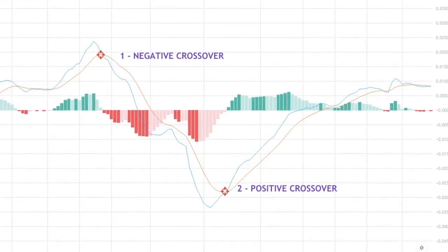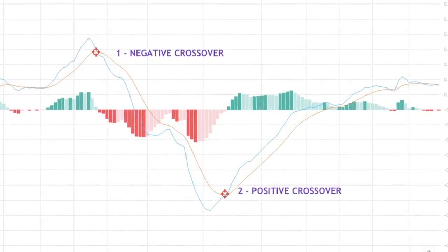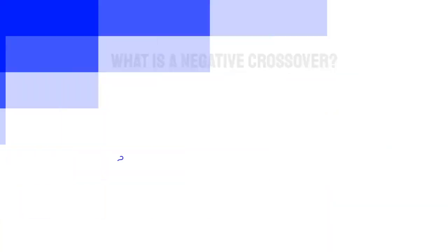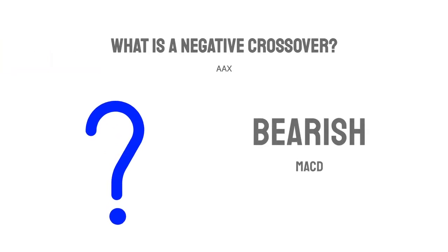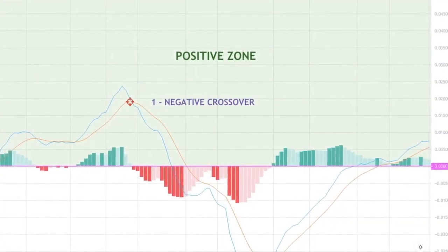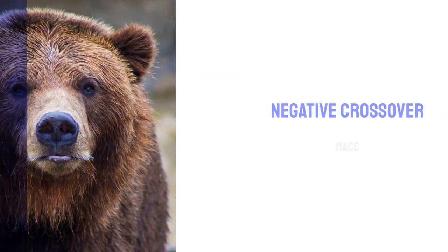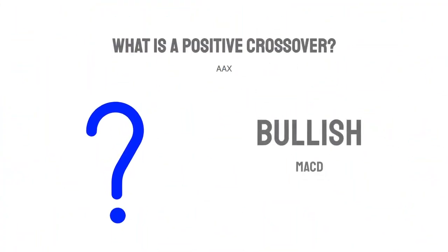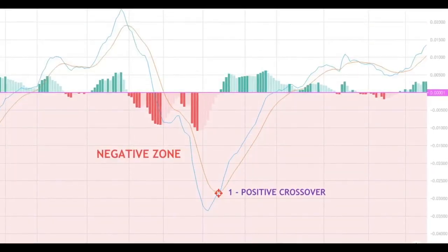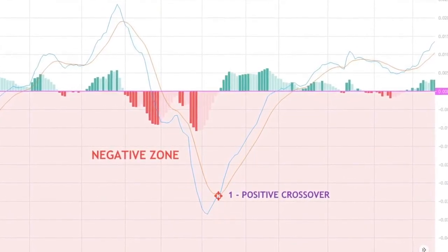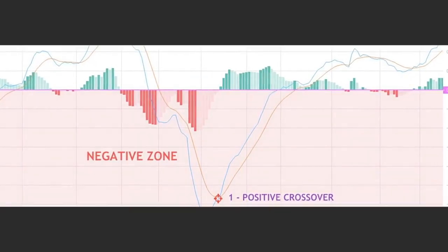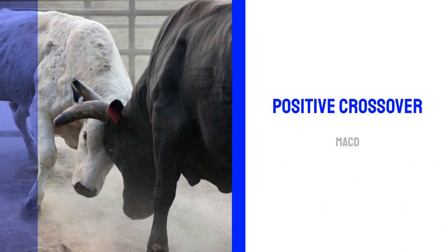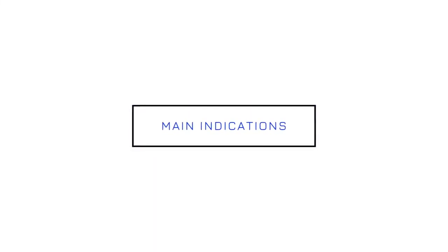A crossover is when the MACD either moves above or below the 9-day EMA MACD. As shown on the screen here, there are two crossovers — a negative and a positive crossover. A negative crossover is when the MACD line falls below the 9-day EMA MACD line in the positive area, and is often seen as a bearish signal. A positive crossover is the opposite, with the MACD rising above the 9-day EMA MACD in the negative area, and is often seen as bullish in cryptocurrency technical analysis. Negative and positive crossovers are the two main indications which the MACD indicator displays.